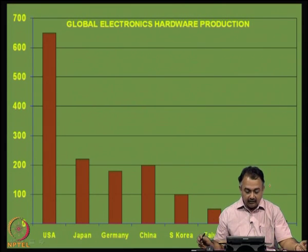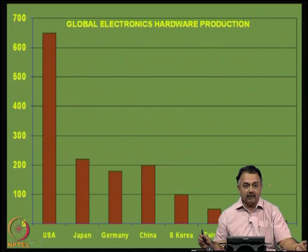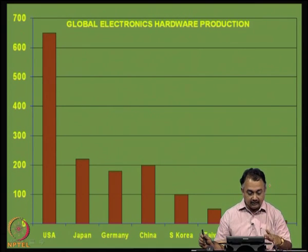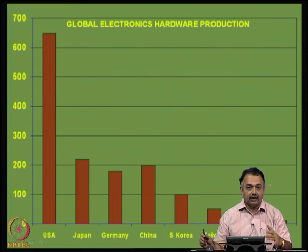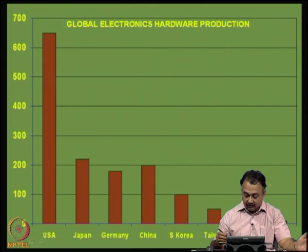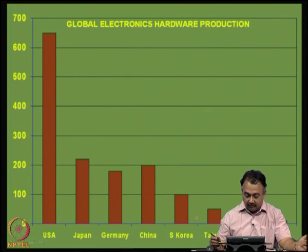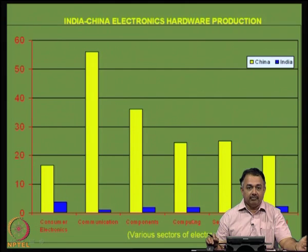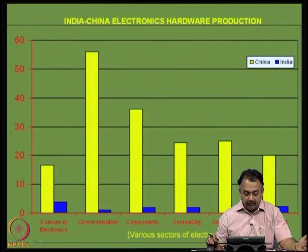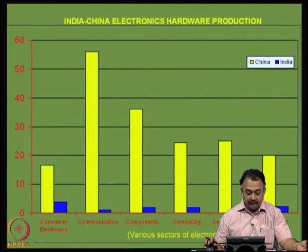Looking at global electronics hardware production, the USA is at almost 650 plus billion dollars while India is close to about 25 billion dollars, with European countries also having a major share. If you compare India and China's electronics hardware production, India is lagging behind. We are very good in software, but we are slowly picking up in hardware production, and there needs to be a lot of growth in this sector.